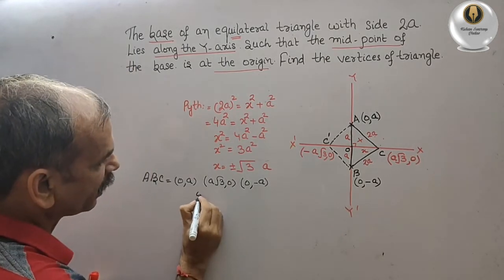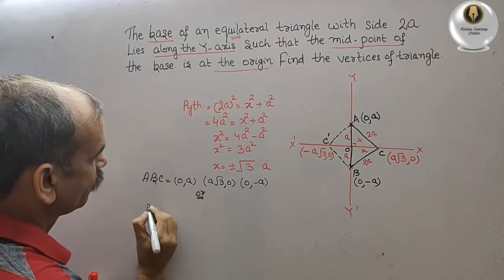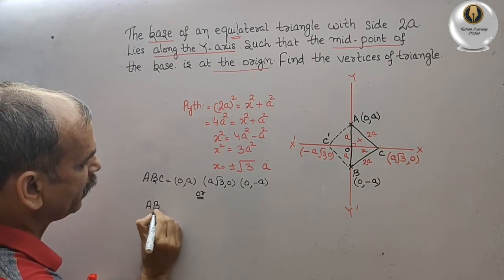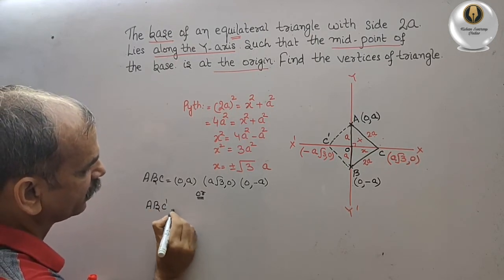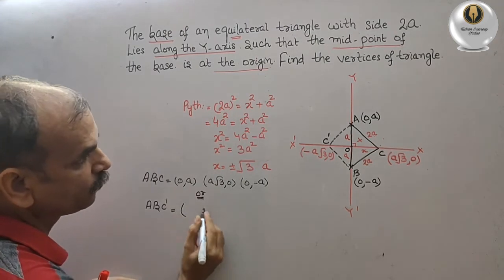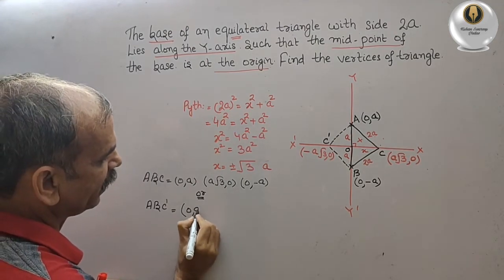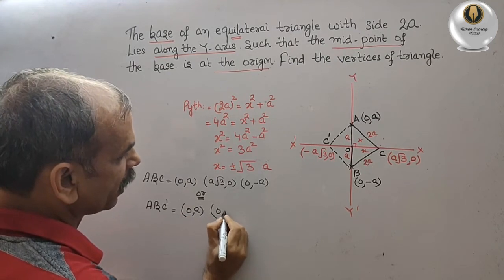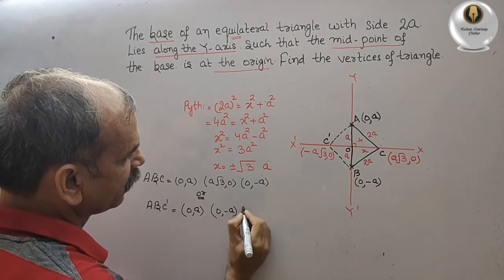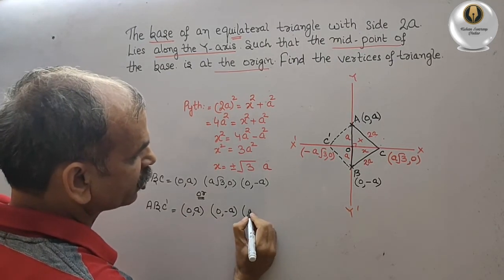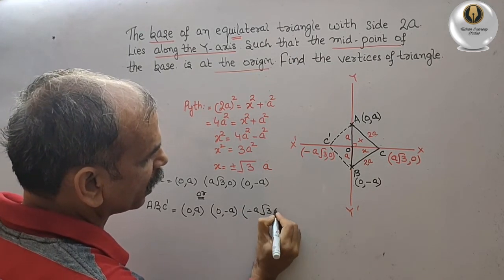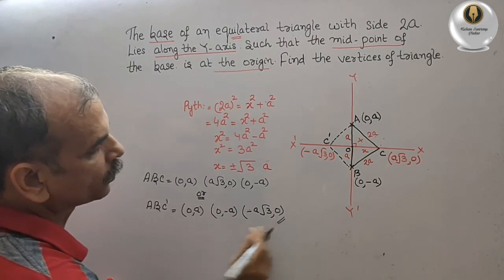Or we can write, the second triangle is A, B and C dash. What is the coordinates? 0 comma A, and next is your 0 comma minus A, and C dash is your minus A root 3 comma 0. Okay?